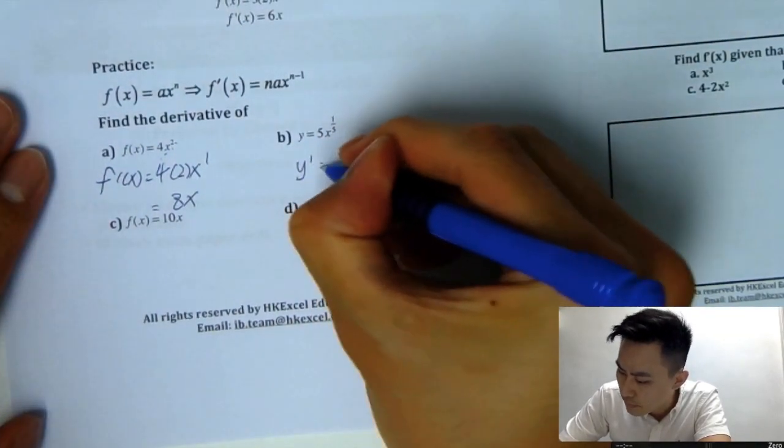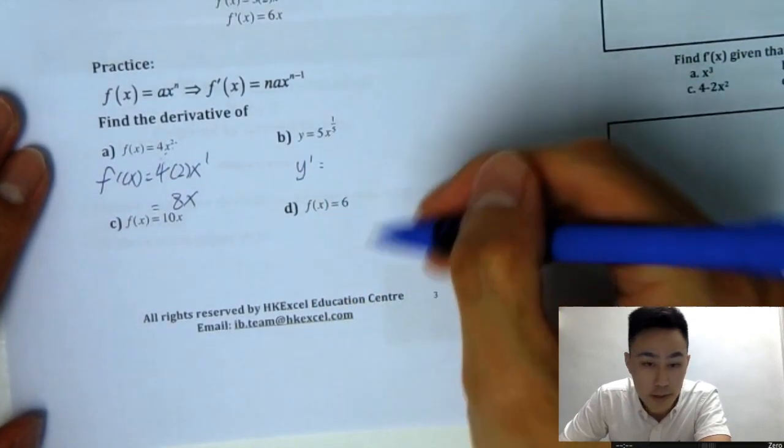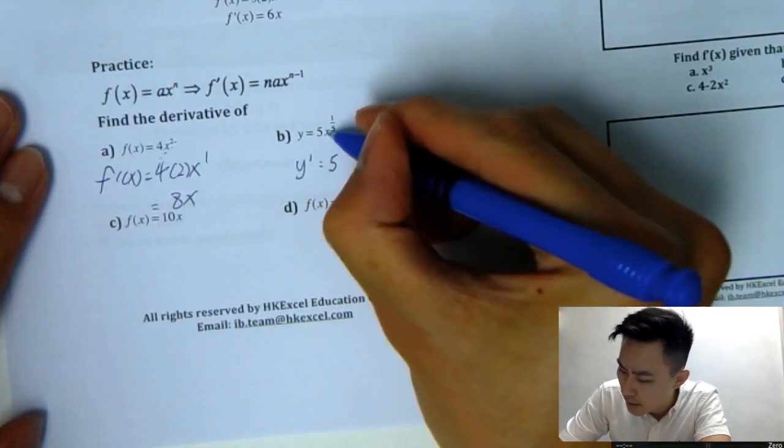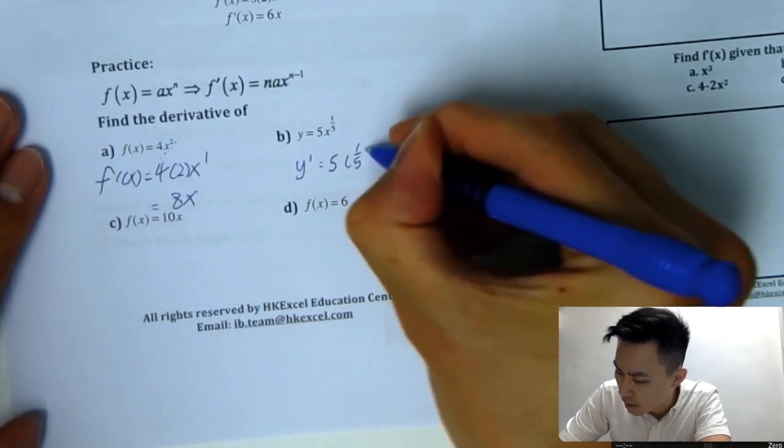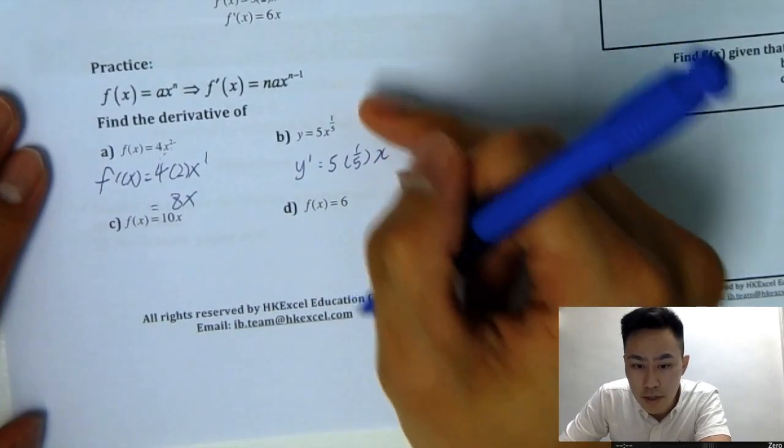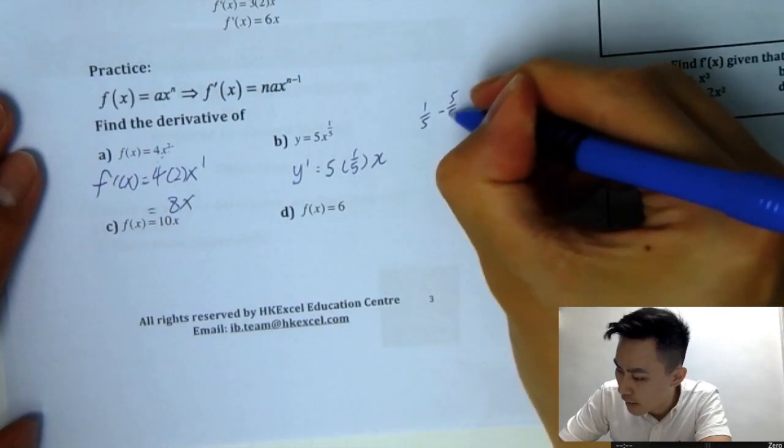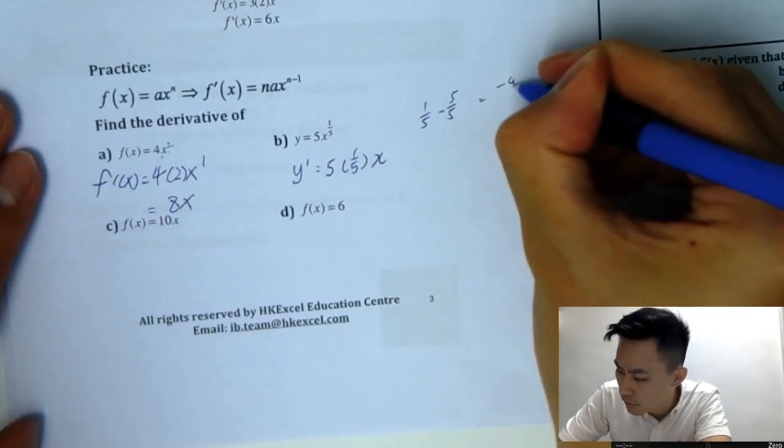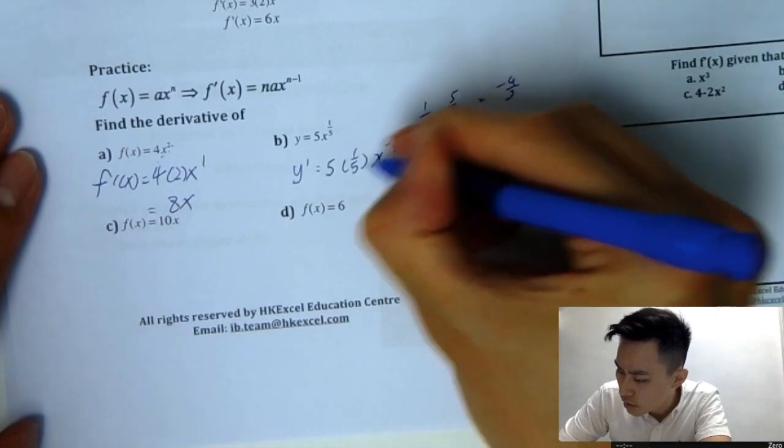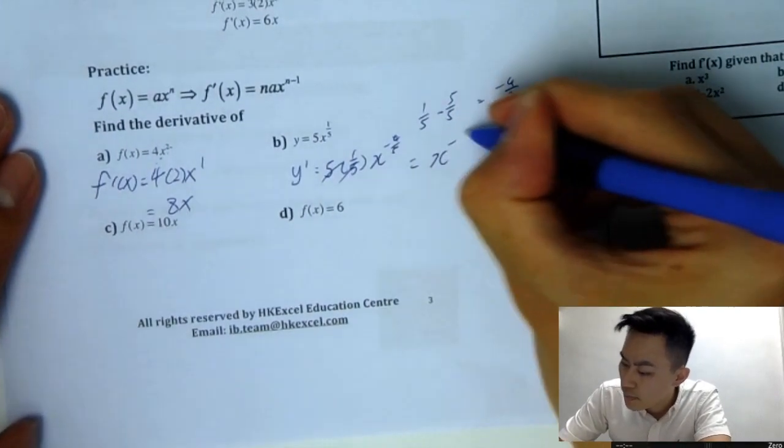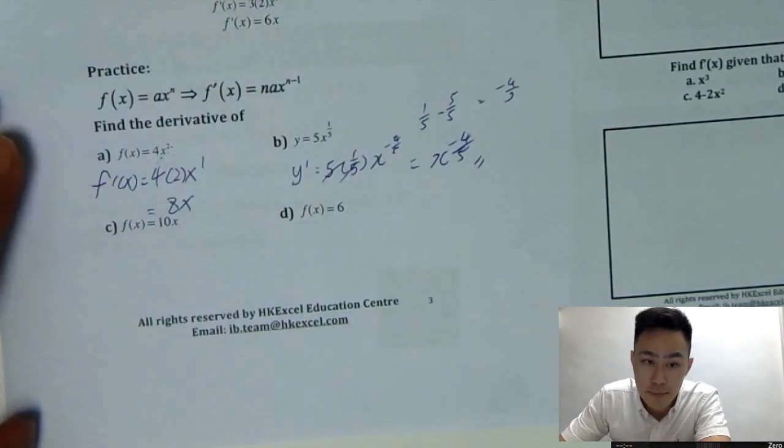And question B, y prime is equal to, or you can write dy over dx. We keep the 5. And then power, you multiply here. And then power minus 1. 1 over 5 minus 1. So that would be 5 over 5. So minus 1, 5 over 5, minus 4 over 5. So simplify that. x minus 4 over 5. That's it.